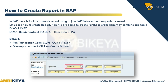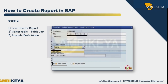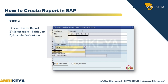The tables are EKKO and EKPO. EKKO contains header data of the PO; EKPO contains item data of the PO. Step one: run transaction code SQVI (Quick Viewer), give a report name, and click on the Create button. Step two: give a title for the report, select Table Join layout.